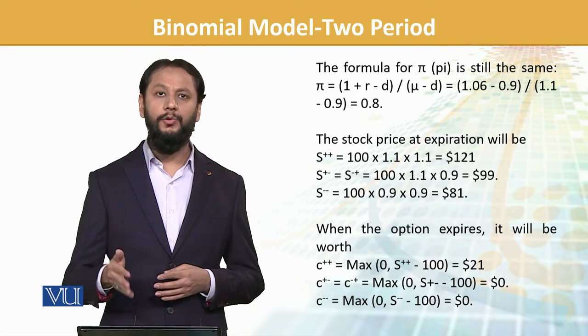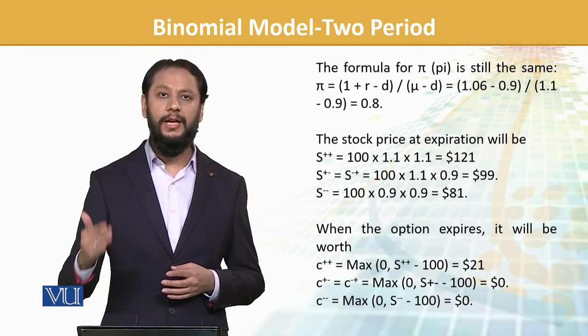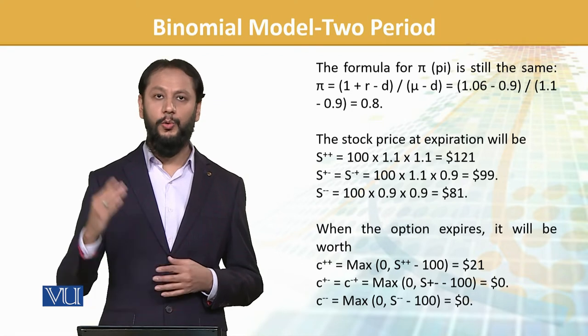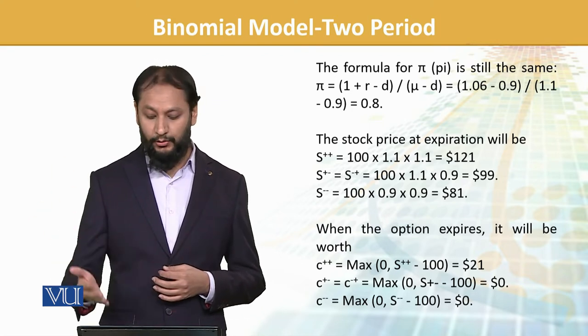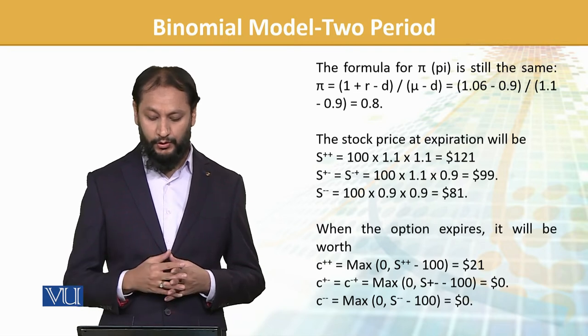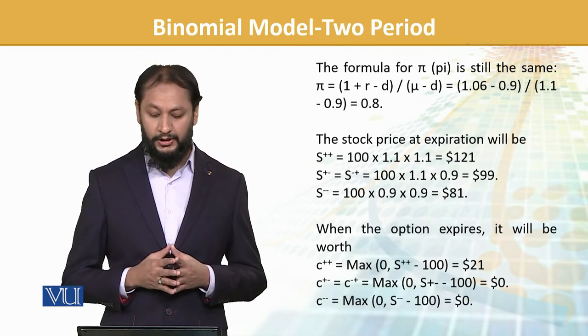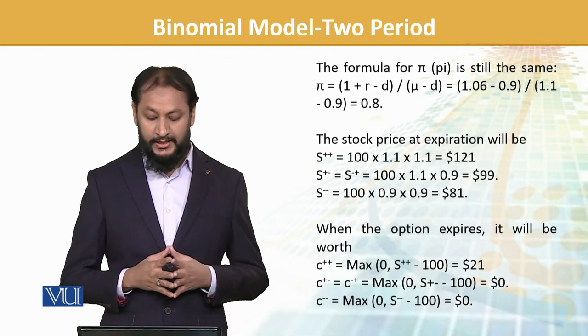$100 times 1.1 at the first node, times 1.1 at the second node takes it to $121. If it's one up and one down, then $99. This is the calculation we can simply see.